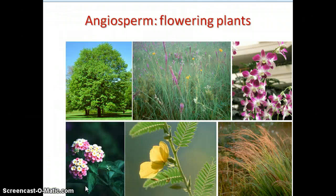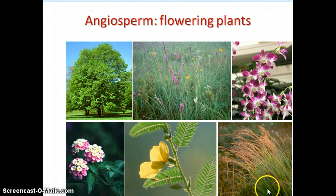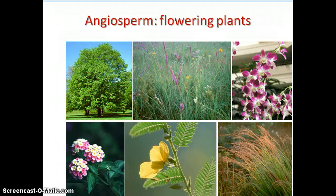These are examples of angiosperms, or flowering plants. Any plant that flowers — even an oak tree, and as widespread as grasses — anything that produces a flower is considered an angiosperm, and they all share the same reproductive life cycle.